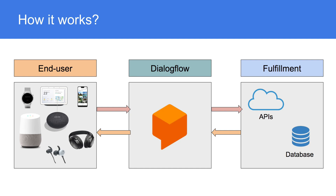For example, our action provides the user astrology on a daily basis. In order to get the data, the intent will call the Fulfillment service, which can get data based on the current date and respond back to the user with information.